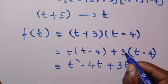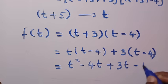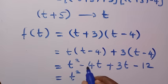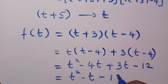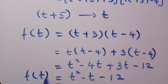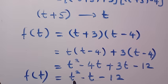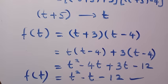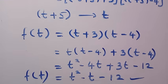Collecting like terms: t squared, then minus 4t plus 3t gives minus t, then minus 12. So f(t) equals t squared minus t minus 12. This is the result of f(t) from the first method. Now let's consider the second method of solving this same problem.